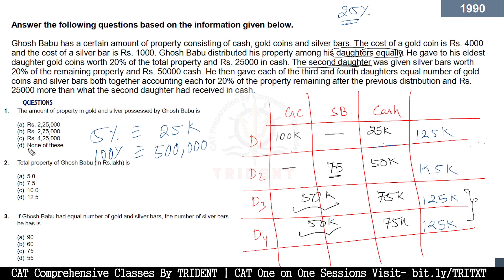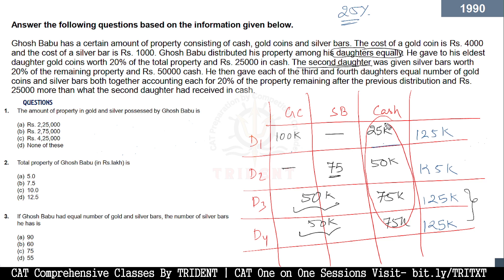The first question asks for the amount of property in gold and silver possessed by Ghosh Babu. We just add up the gold and silver columns across all daughters. The total cash distributed is 25k + 50k + 75k + 75k = 225k. Since the total property is 500k, the remaining amount in gold and silver is 500k minus 225k, which equals 275k.